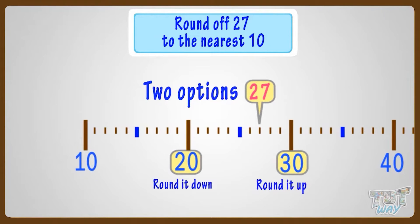Also, we learned that if the number is below 5 mark, we round it down or else we round it up. Here, 27 is above the 5 mark. So we will round it up to 30.